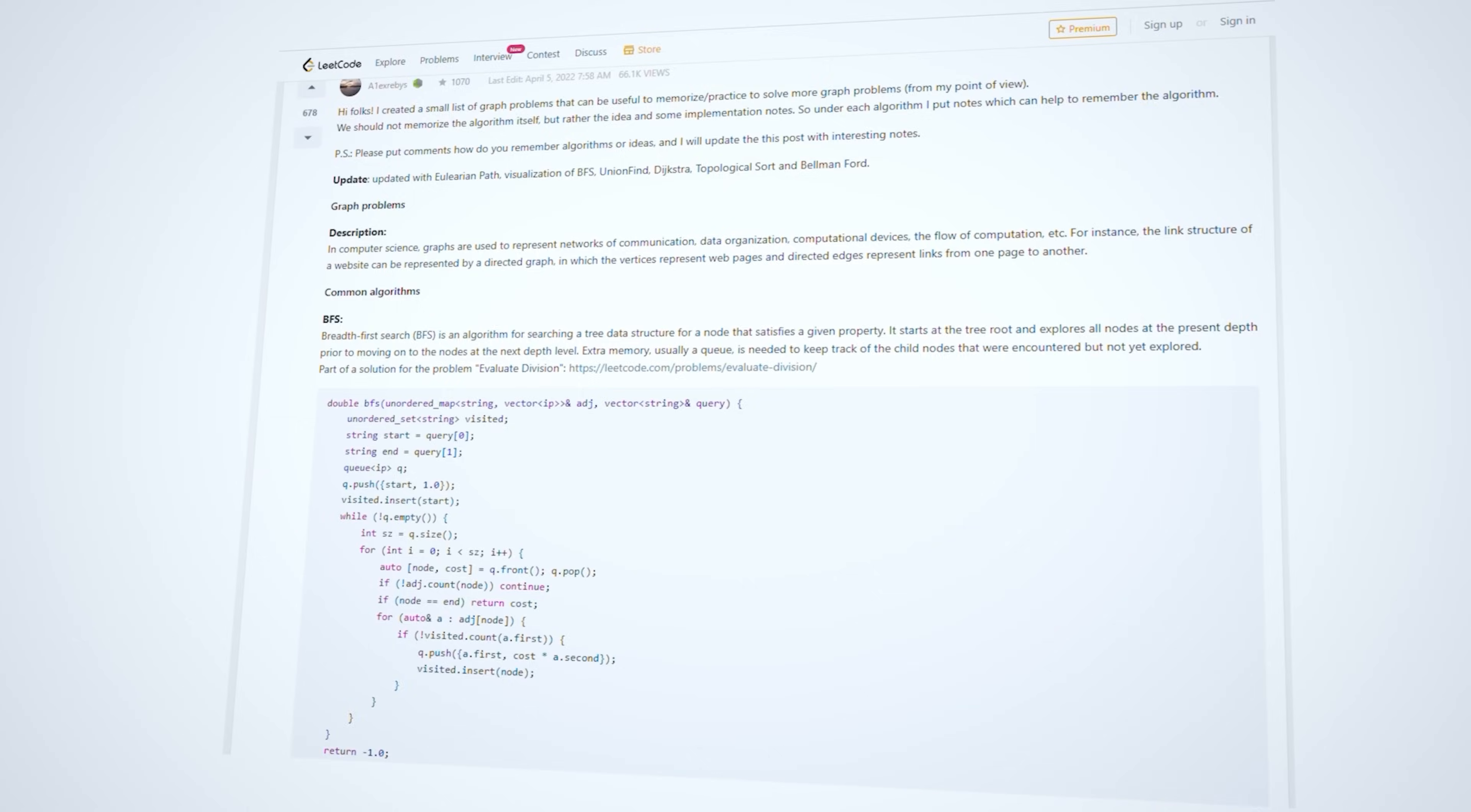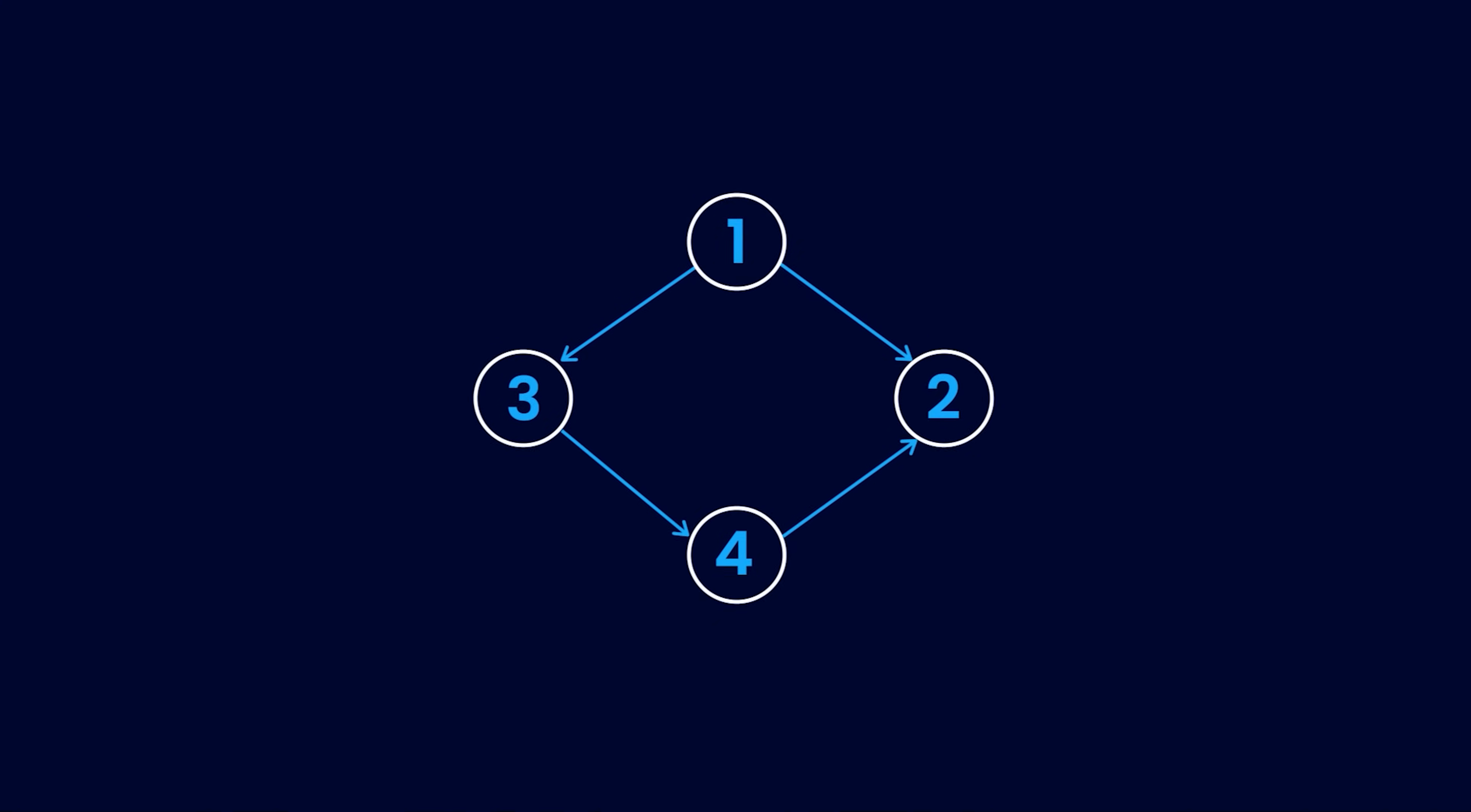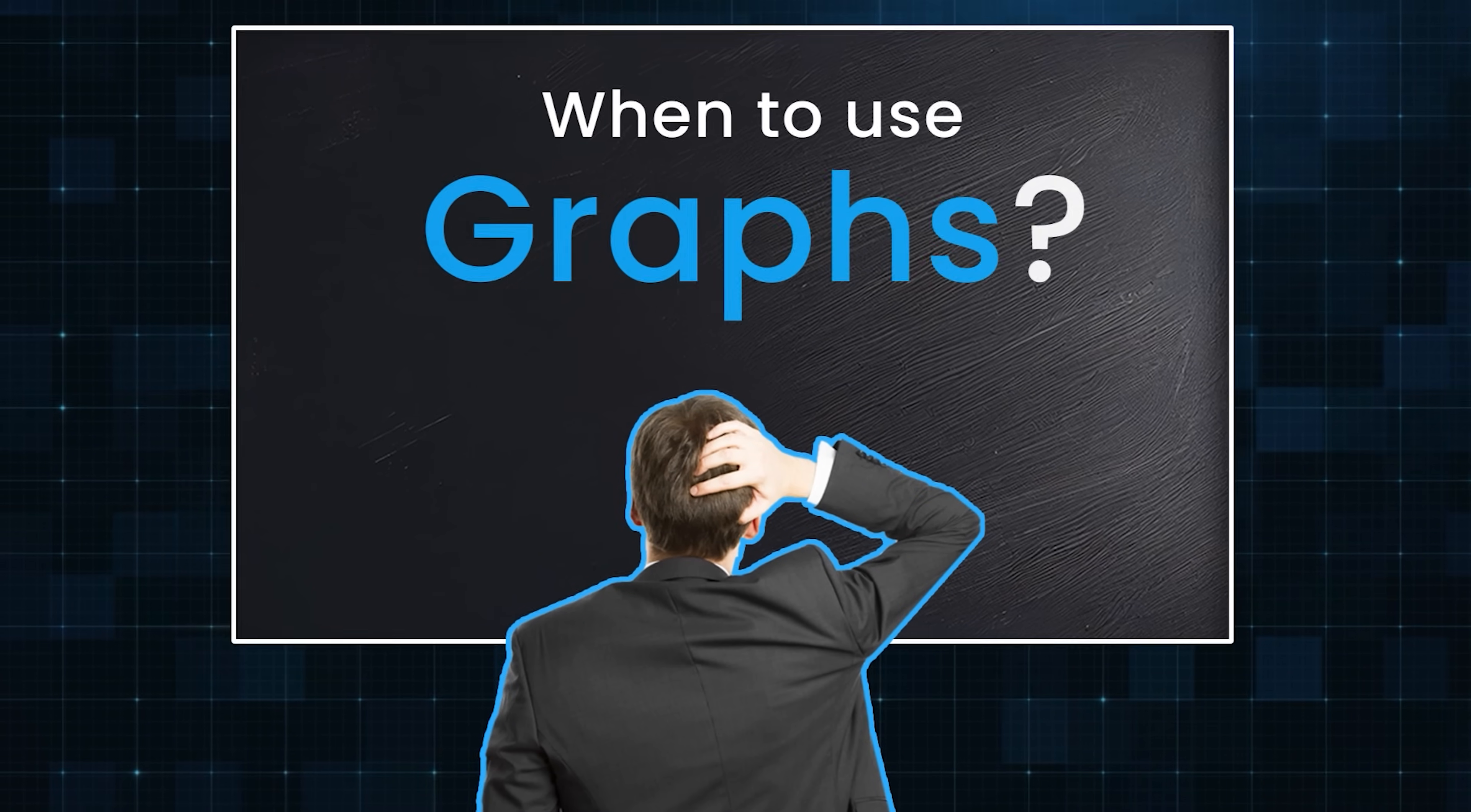At number one, we have graphs. Many difficult problems asked in coding interviews use graphs. A graph is a data structure that contains a set of vertices and edges that connect these vertices. When the edges of a graph have a direction, it's called a directed graph. Otherwise, it's called an undirected graph. Wherever you spot relationships between different entities in a coding problem, you should be thinking about graphs.